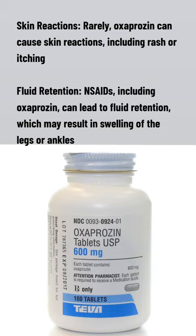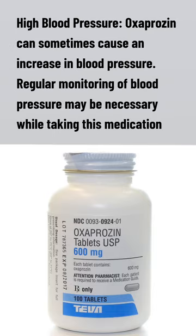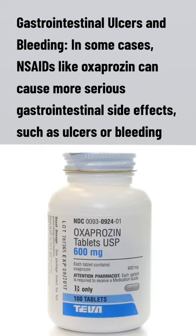Fluid retention: NSAIDs, including oxaprozin, can lead to fluid retention, which may result in swelling of the legs or ankles. High blood pressure: Oxaprozin can sometimes cause an increase in blood pressure, and regular monitoring may be necessary. Gastrointestinal ulcers and bleeding: In some cases, NSAIDs like oxaprozin can cause more serious gastrointestinal side effects such as ulcers or bleeding.